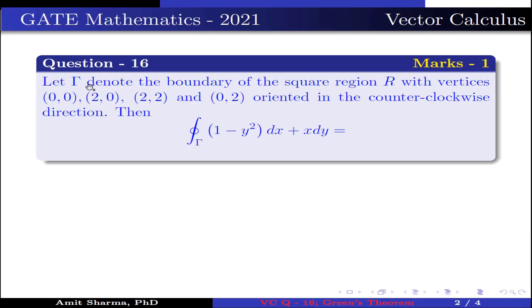Question is, let gamma denote the boundary of a square region R with vertices (0,0), (2,0), (2,2) and (0,2) oriented in counterclockwise direction. Then the closed integration over gamma (1-y²)dx + xdy is equal to.